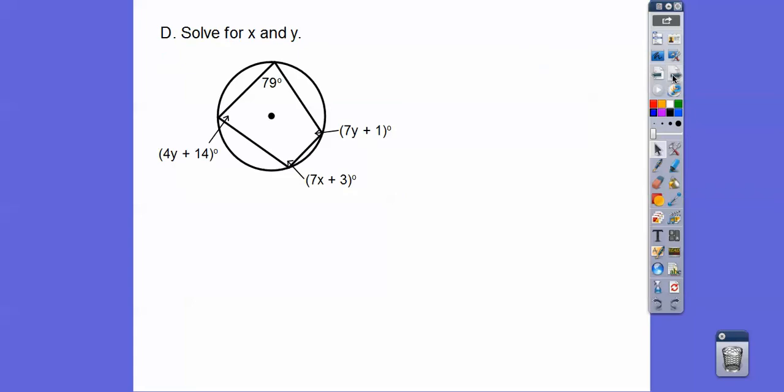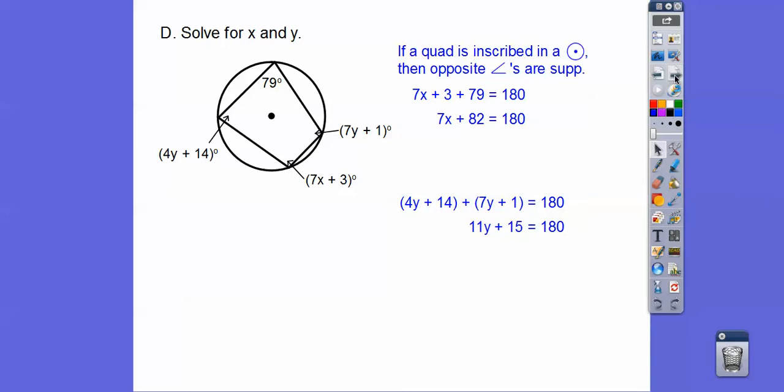Solve for X and Y. So here's a quadrilateral inscribed in a circle. So if it's inscribed in a circle, then the opposite angles, this angle and this angle are supplementary. This angle and this angle are supplementary. Supplementary is 180. So we go ahead and add them up to 180 and then combine like terms and then we're going to subtract off the 82 and the 15 and then we're going to divide by 7 and divide by 11 and we get X equals 14 and Y equals 15 right there.